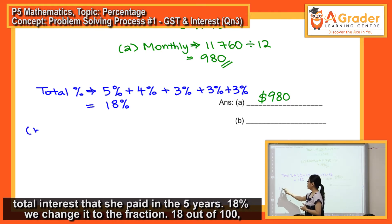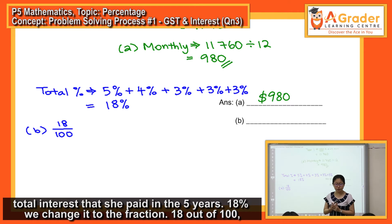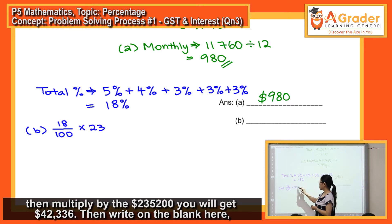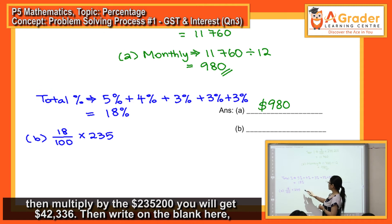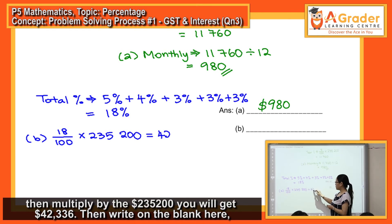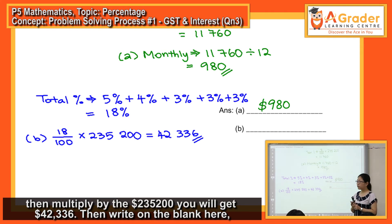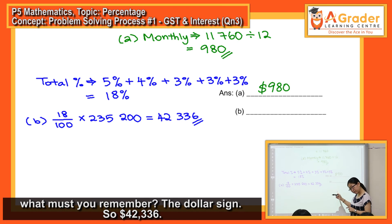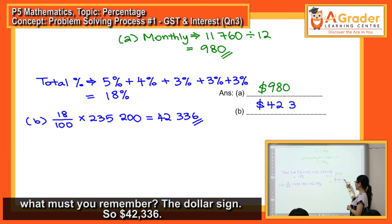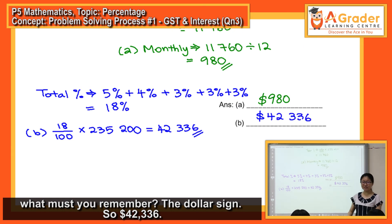For Part B: 18% converted to the fraction 18 out of 100, multiplied by $235,200, gives $42,336. Remember to write the dollar sign on the blank — $42,336.